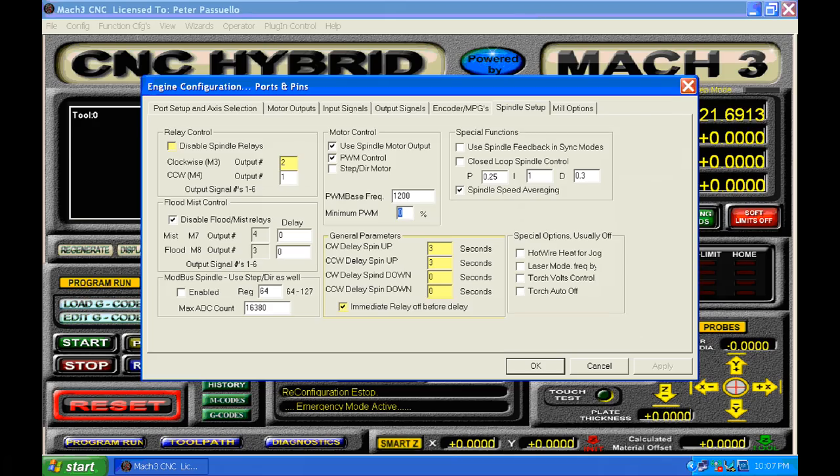Staying under ports and pins we come along to spindle setup. Here we uncheck the disable spindle relays and under M3 clockwise we select the output number in this case 2. That was output 2 we configured in the previous page. Going down further under general parameters we need to set a spin up time for the spindle. In my case I've chosen 3 seconds. We then check immediate relay off before delay.